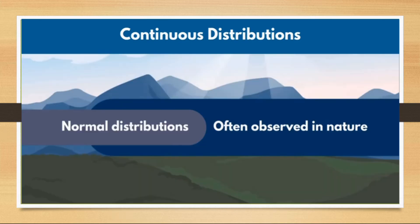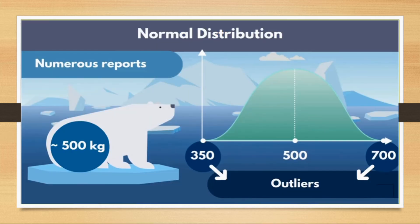The first one is normal distribution, which is by far the most commonly used distribution because most events in nature closely resemble this distribution. For example, the weight of a polar bear is generally around 500 kilograms, but depending on its individual species, it can be as low as 350 kilograms or as high as 700 kilograms. The same is the case with height of humans or marks of a class — they all closely resemble normal distribution. Most values will be concentrated around its mean, and extreme values that are rare are also called outliers.